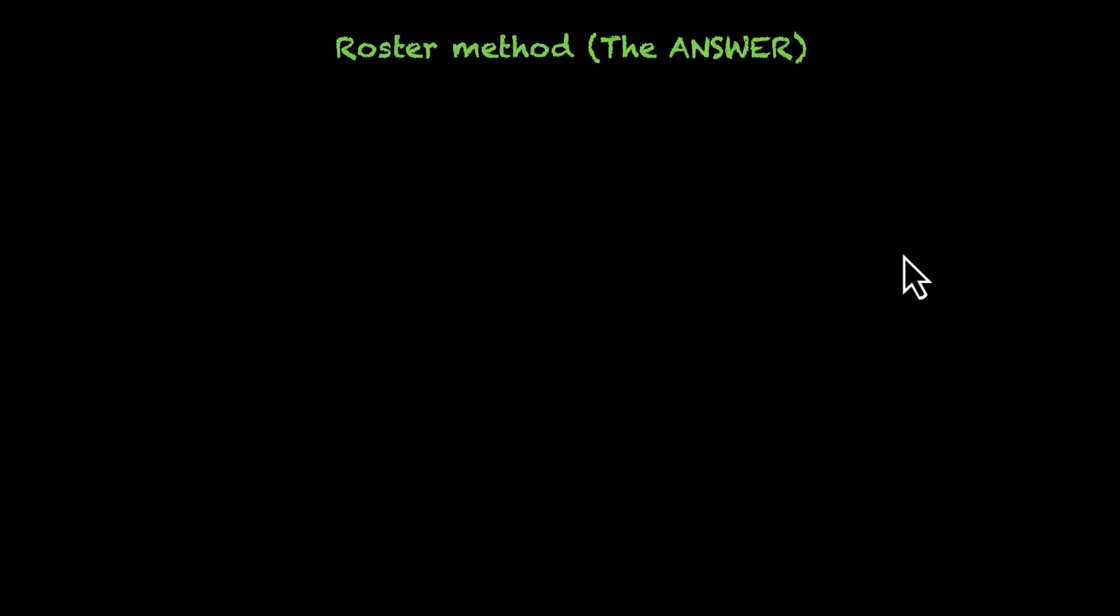So roster method is the answer method. You are given a question and if you write the answer for that, that's what we call the roster method. Let's take an example. If you want to write all odd positive integers less than 10, this is how you do it. The first thing to do is have brackets and within these brackets, you'll have your answer.